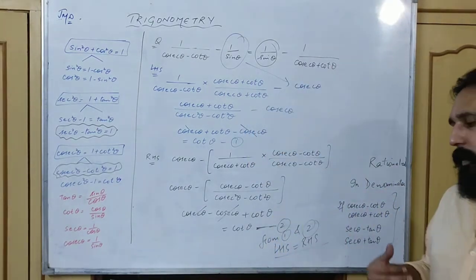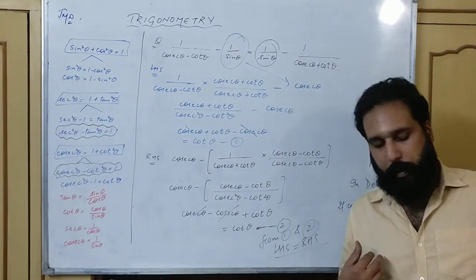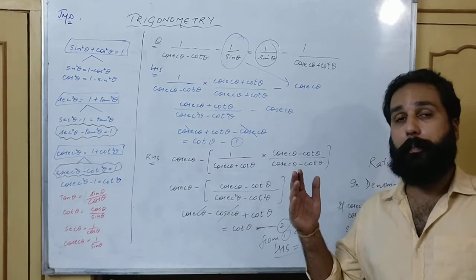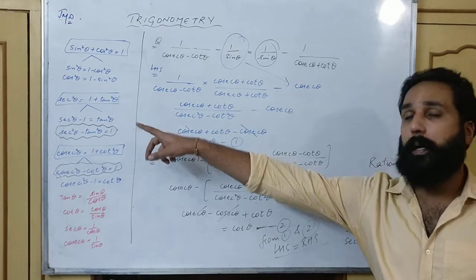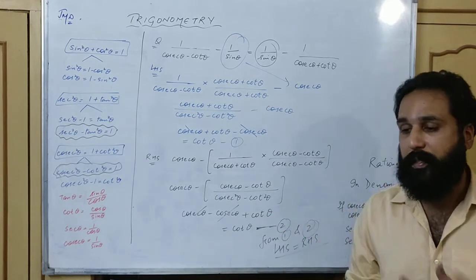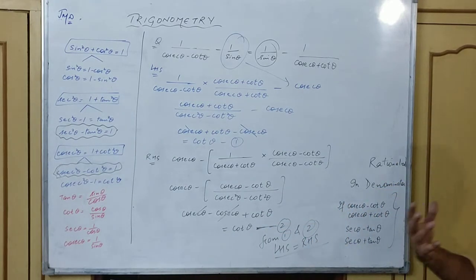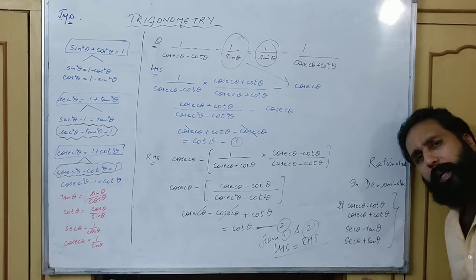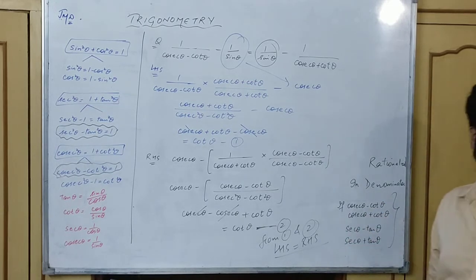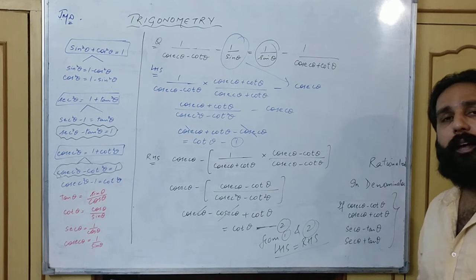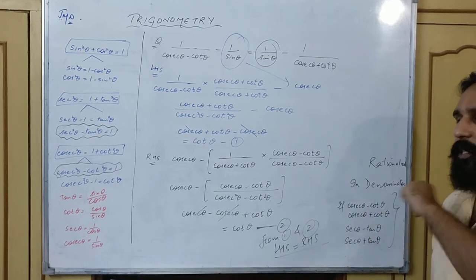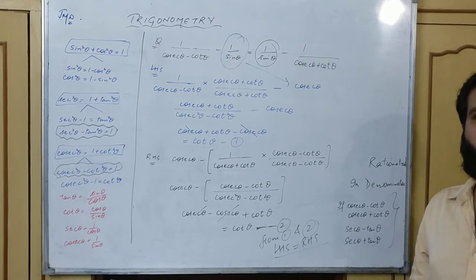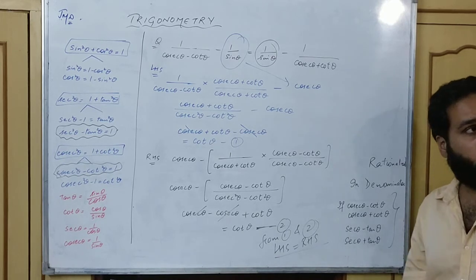If you do this in sin-cos the answer will come too, but it becomes a lot more complicated. The simple concept is: if the identities cosec²θ - cot²θ = 1 and sec²θ - tan²θ = 1 are in your memory, then wherever you see cosec + cot, cosec - cot, sec + tan, or sec - tan in the denominators, always rationalize — and your answer becomes that easy. Clear? Please note it down.